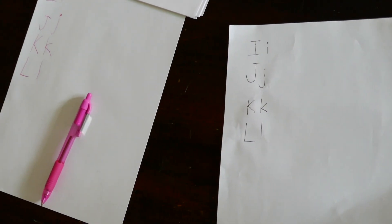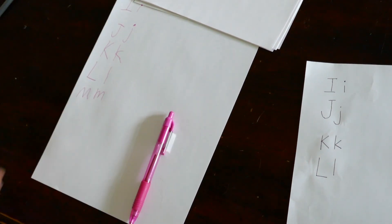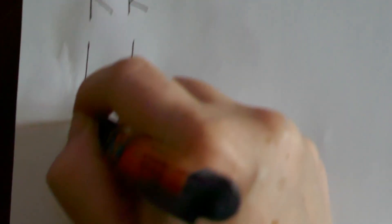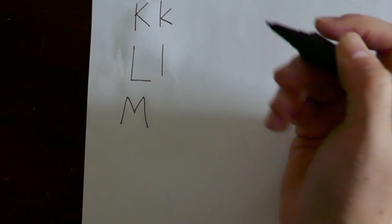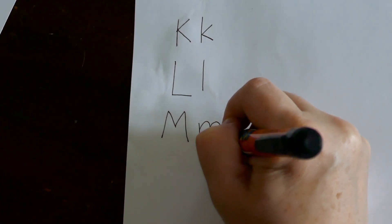After L comes M. Right. Good. So for M, we're going to make a series of lines that almost look like mountains. So we're going to do line up, down up, down up, and then the lowercase, we're going to have a line with two little humps. M.